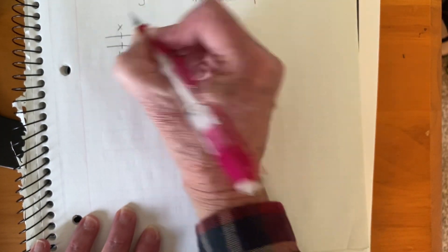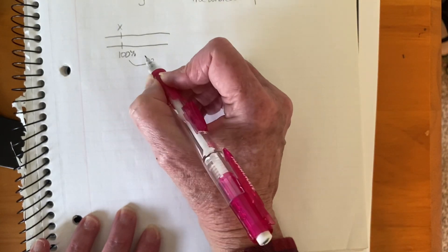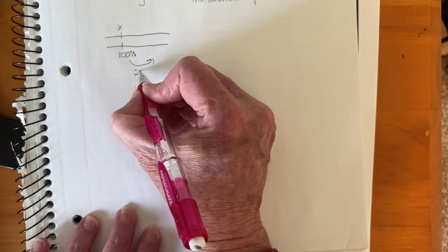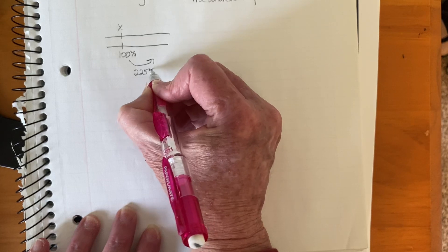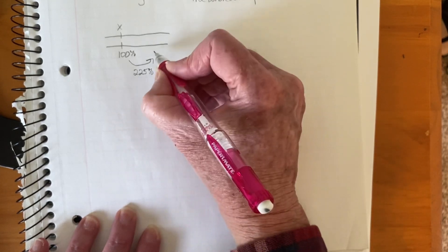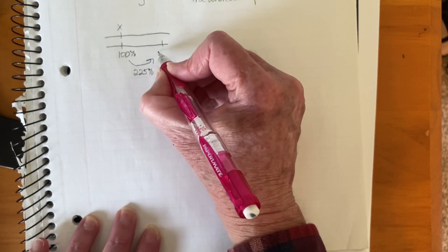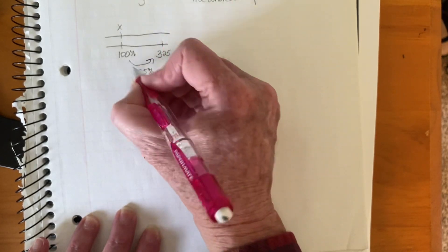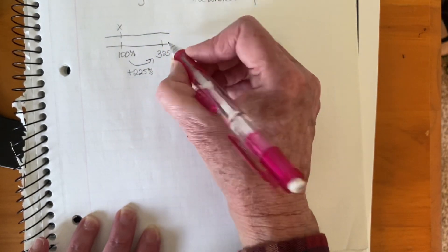That's our X because X is always 100%. And then we are marking this up 225%. We're not just going to 225. We are actually going to 325% because we are marking it up 225%.